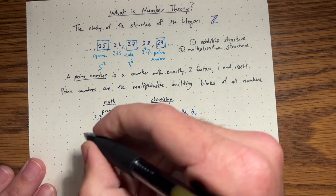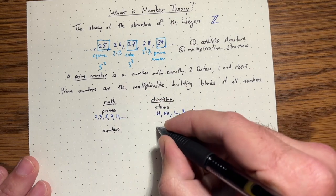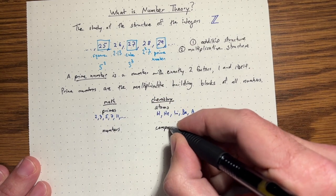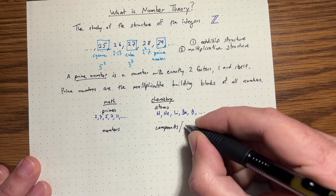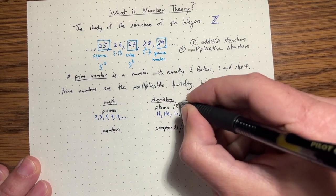And numbers, just any old numbers, are like compounds or molecules. The atoms are just the pure elements.